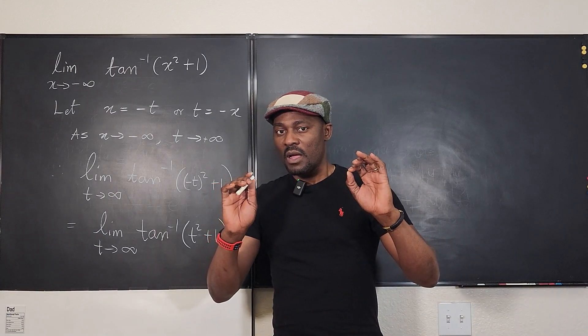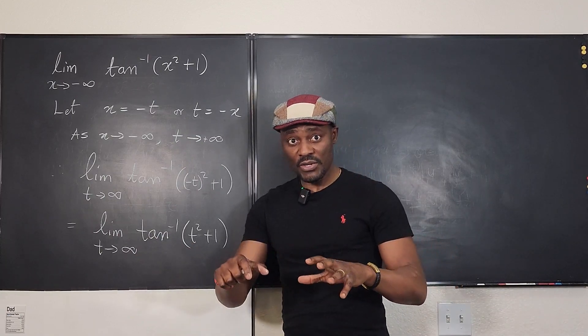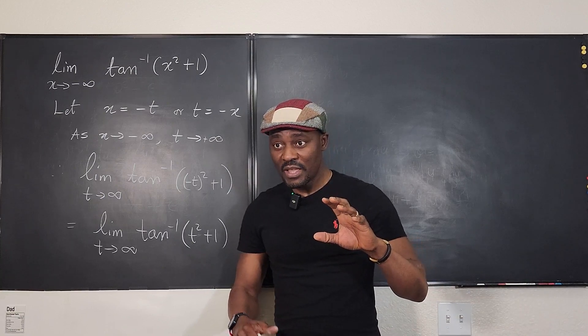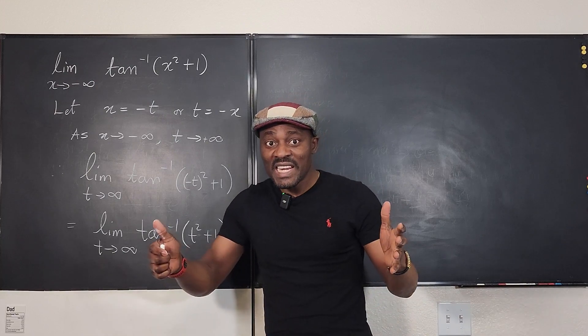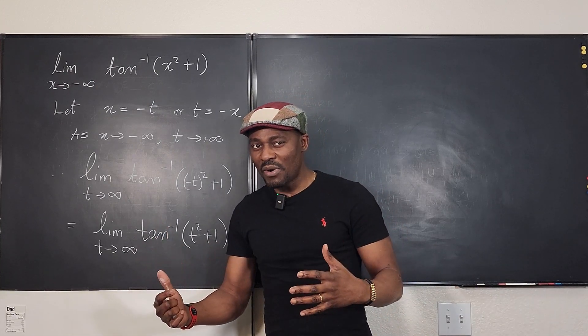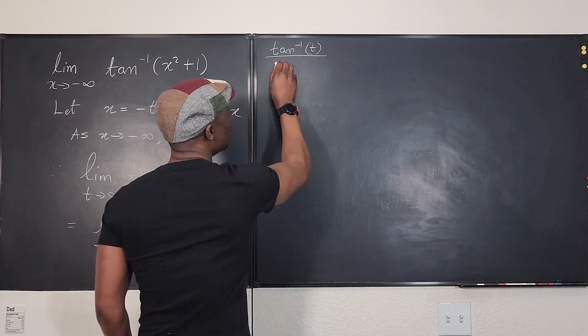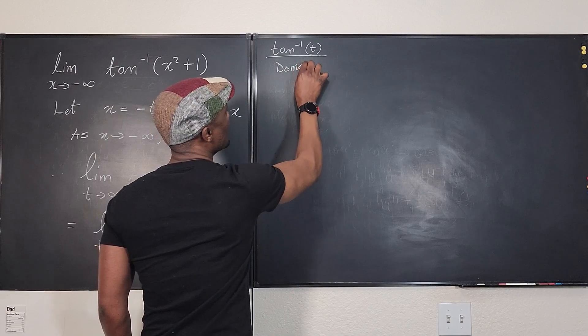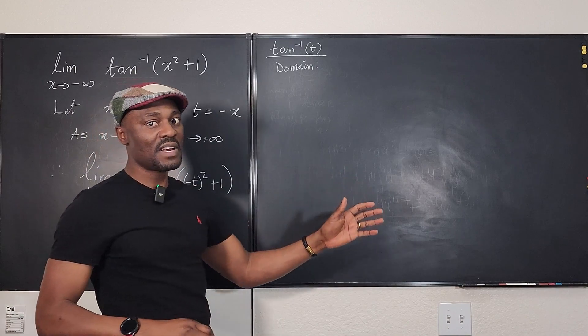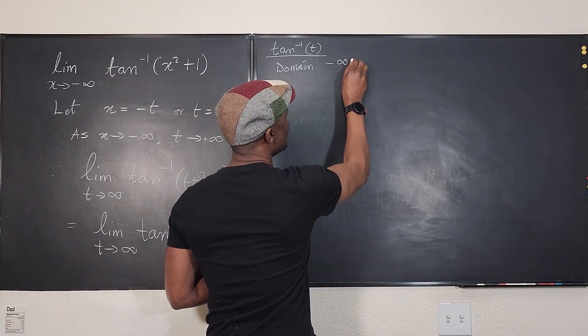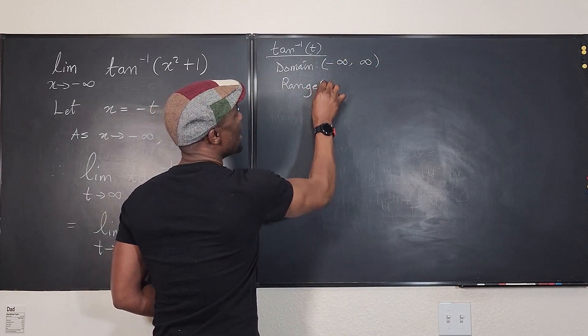Now, what do you think happens with arctan? No matter what you plug in, even on your calculator, no matter what you plug in to the arctan function, it will always give you a value that is within its range. What is the range of arctan? For arctan t, let's just see generally. Arctan t, you have the domain. The domain, that is the values that you can plug into this, go from negative infinity to positive infinity.